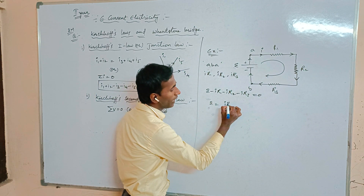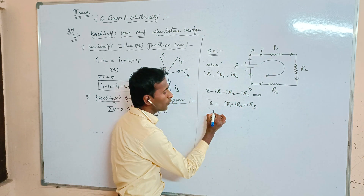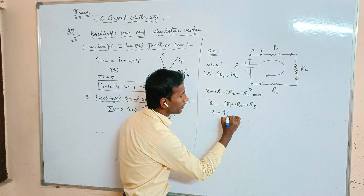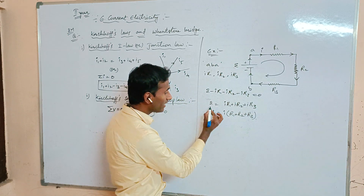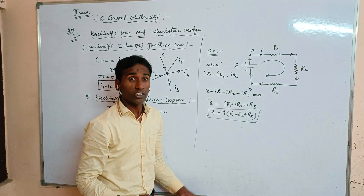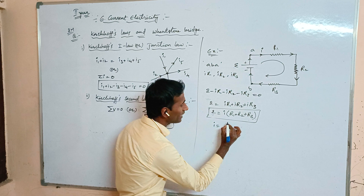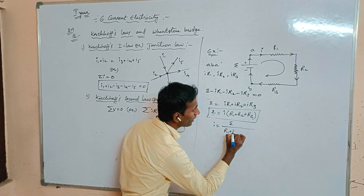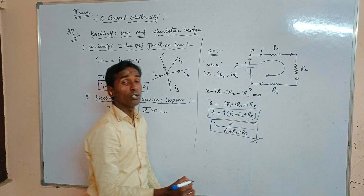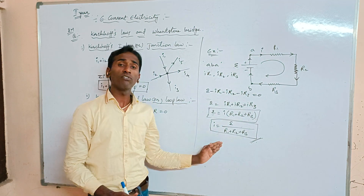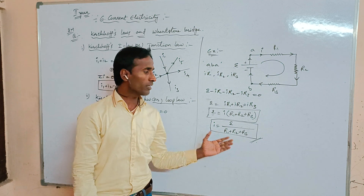Rearranging: E = ir1 + ir2 + ir3, which gives E = i(r1 + r2 + r3). Therefore, the current is: i = E / (r1 + r2 + r3). This is the most important formula for solving problems and for examination purposes.